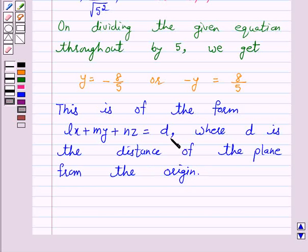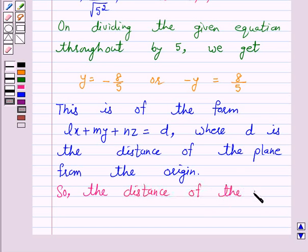So here we see that d is equal to 8 over 5. So the distance of the plane from the origin is 8 over 5.